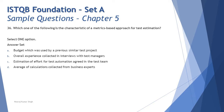Option B says 'overall experience collected in interviews with the test managers' — this is an expert-based approach because it involves interviews and discussion with test managers. Option C says 'estimation of effort for test automation agreed in the test team' — this is also more expert-based and doesn't directly relate to the matrix-based approach.